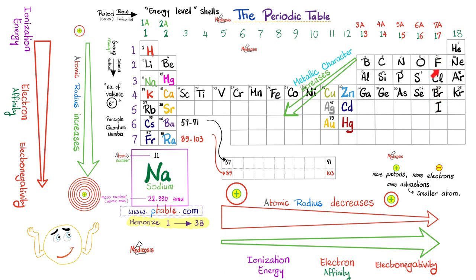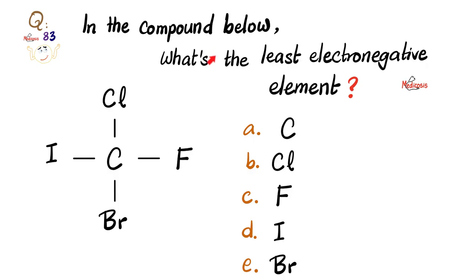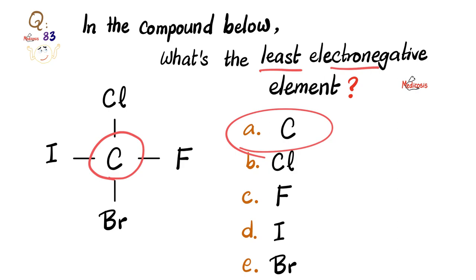Of these options, the most electronegative is fluorine. How about fluorine versus carbon? Going to the right, electronegativity increases, so carbon has lower electronegativity than fluorine. You don't even need to look at the periodic table to find the least electronegative element, because by definition, if this is a properly written Lewis structure, the least electronegative has to be the central atom — which makes carbon the correct answer.